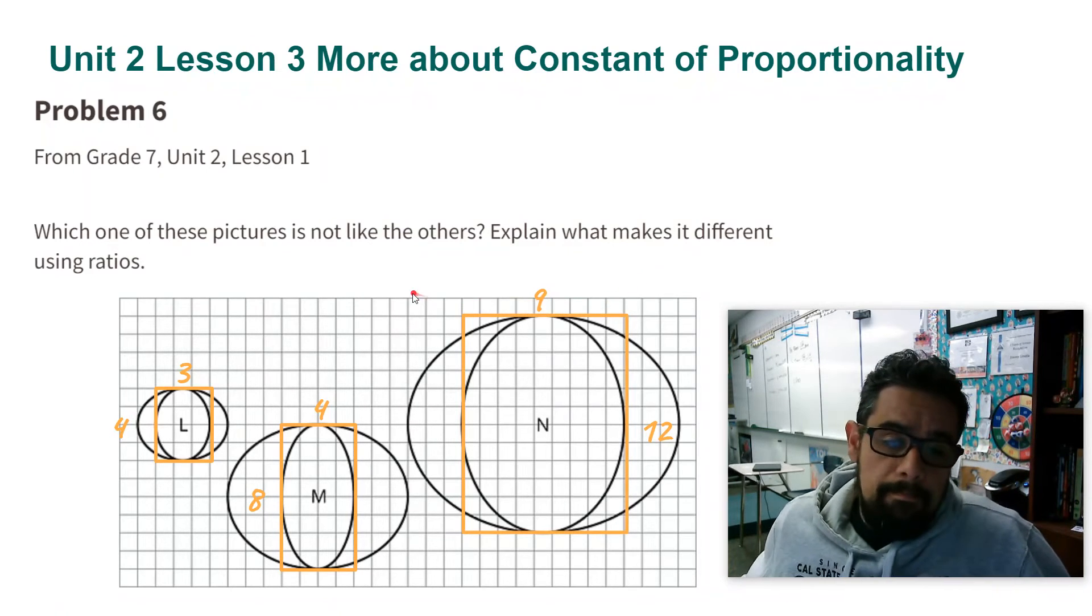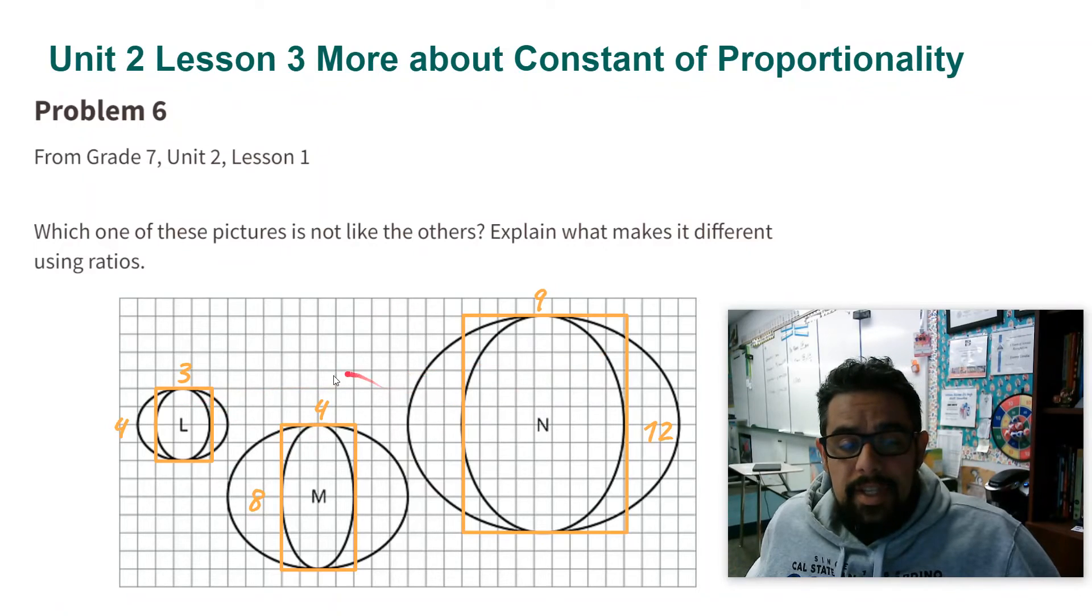For M it's 8 to 4. And then for N it's 12 to 9. Now notice here the ratio that is different is this one right here. M, 8 to 4, is different from 4 to 3 and 12 to 9.